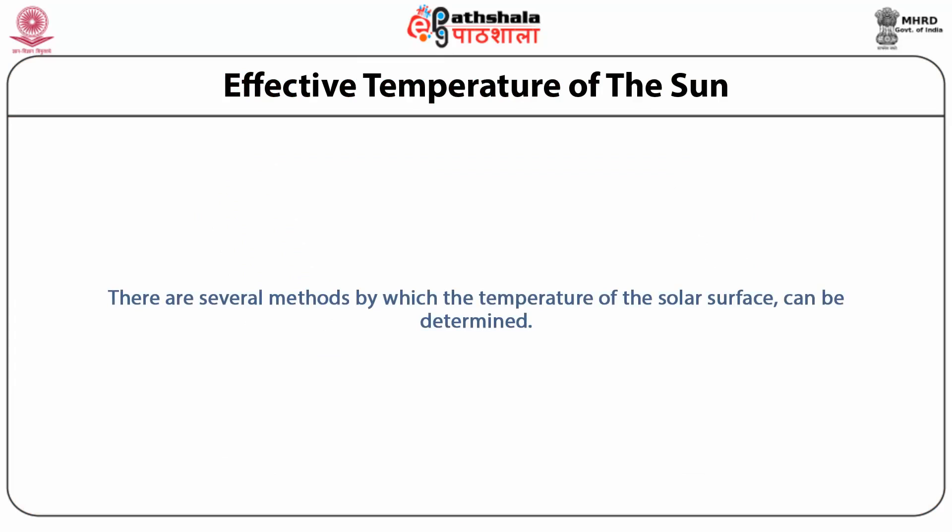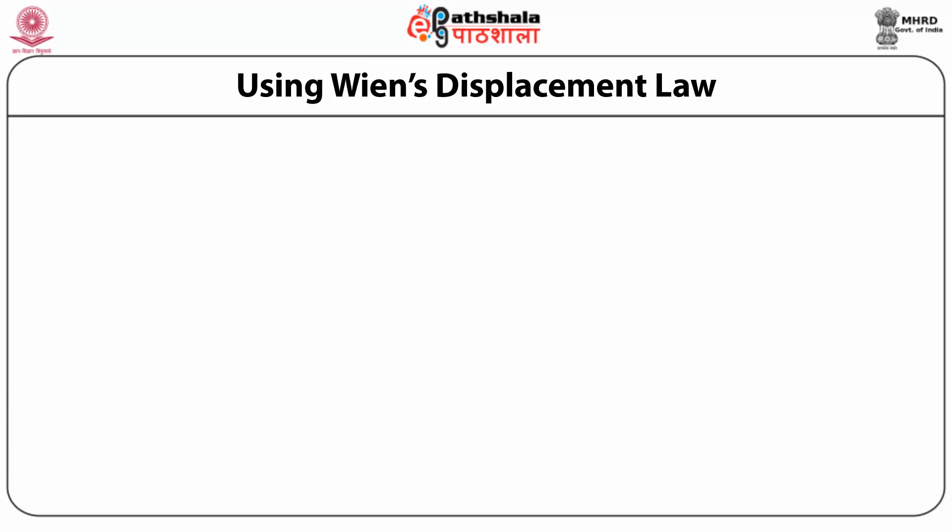That total energy emitted per second is called the luminosity of the Sun. Variations in the solar constant were also discussed, since they may be important in connection with weather and climate change on the Earth and the global warming we are witnessing today. An important data for the Sun is its surface temperature or effective temperature, which we are going to discuss in the present module. There are several methods by which the temperature of the solar surface can be determined.